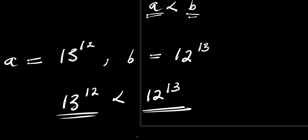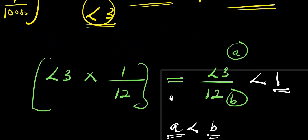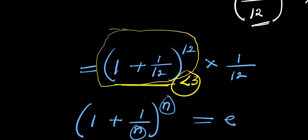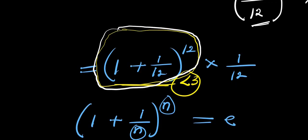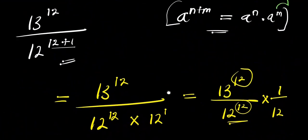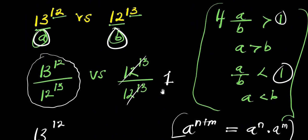We did not use any calculator. We achieved this using Euler's identity, which told us that (1 + 1/12)^12 is less than 3. Multiplying by 1/12 gives less than 3/12, which is less than 1, confirming 13^12 is less than 12^13. Don't forget to subscribe and share this video. Thank you and goodbye.